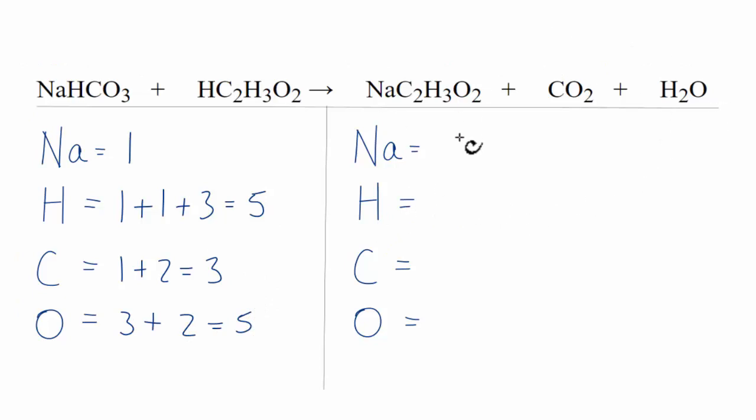On the product side of the equation, we have one sodium. Hydrogens, we have three plus two, that gives us five hydrogen atoms. Carbon, we have two plus this one right here, so we have three carbons.